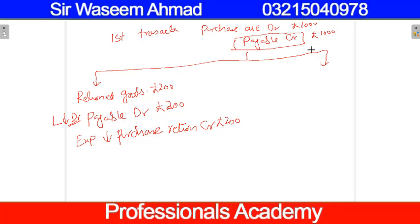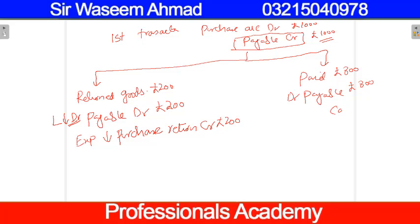Now we have to pay £800 to the supplier. The second option is: paid £800. So the liability will decrease by £800. We will debit payable by £800 and credit cash by £800. Payable is a liability which has decreased so it is debited, and cash is an asset which is also decreased — when asset is decreased it is credited.